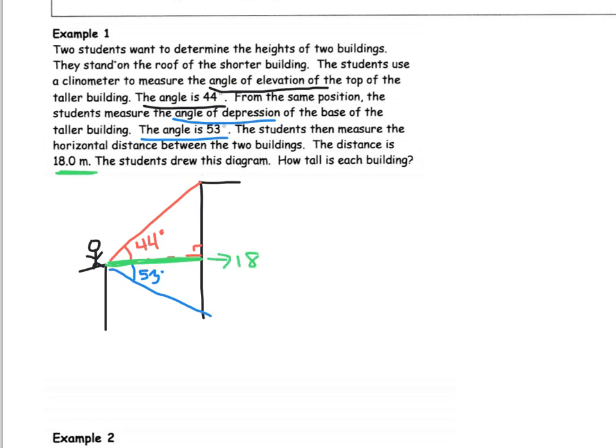The horizontal distance between the buildings is 18 meters. So that means this side is 18. Hopefully you can see that I have two triangles. I have this red triangle and the 18, and then I have my blue triangle and also that 18. It asks how tall is each building? My total height of my tall building is going to be this entire length.